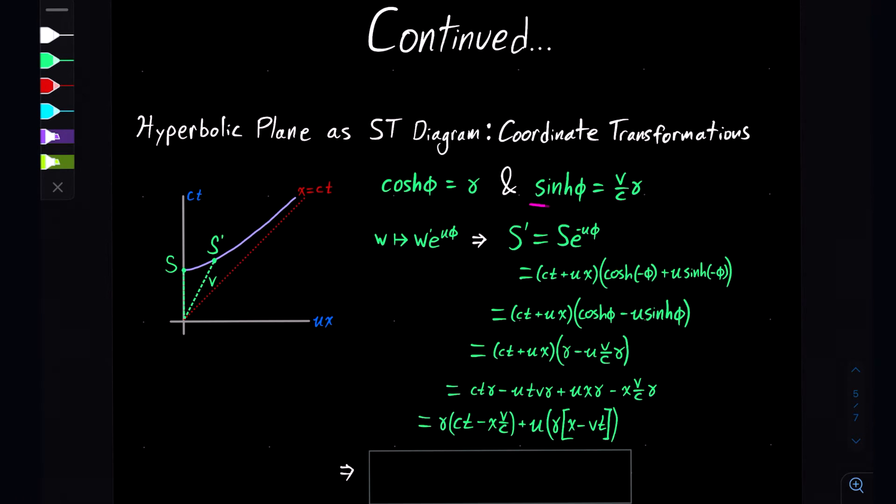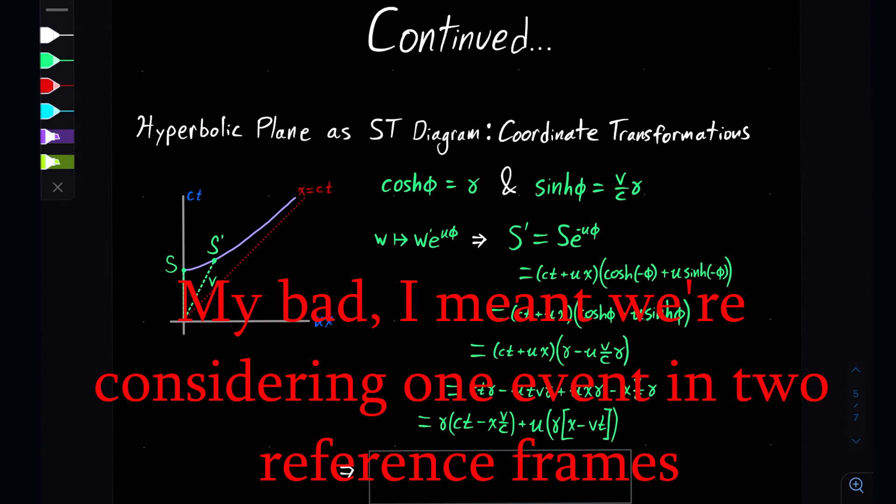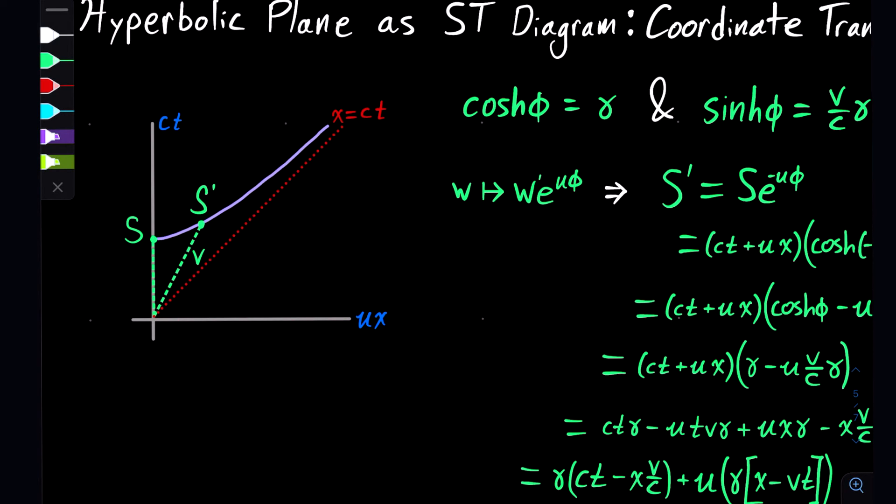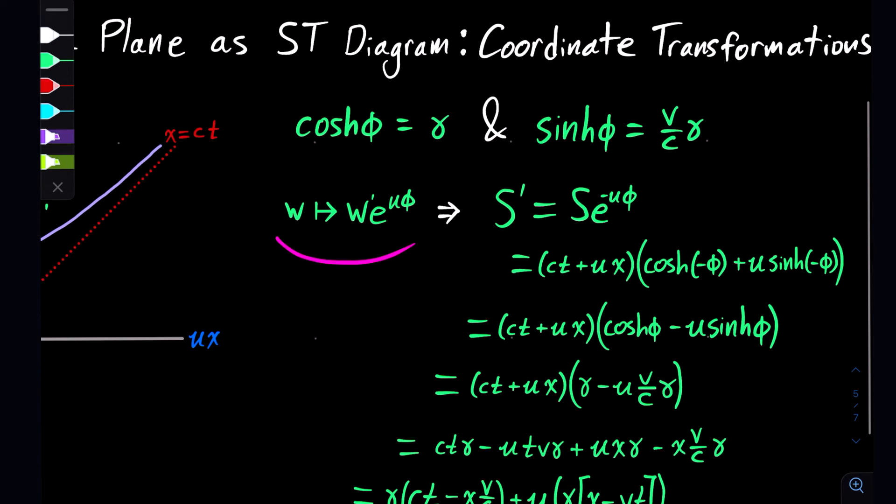Now say we have two spacetime events happening and we want to change between those two. Then we use this hyperbolic mapping, which implies that we need to use this identity.